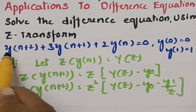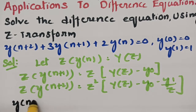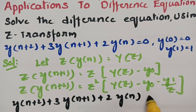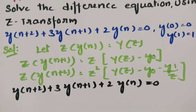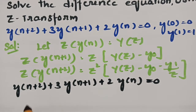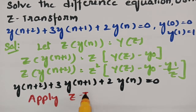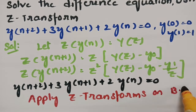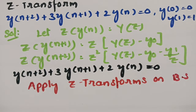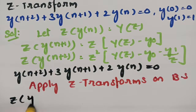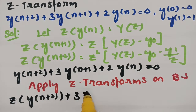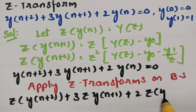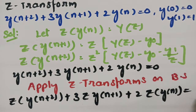From the question, the given equation is y(n+2) + 3·y(n+1) + 2·y(n) = 0. Now, applying Z-transforms on both sides, we get: Z-transform of y(n+2) plus 3 times Z-transform of y(n+1) plus 2 times Z-transform of y(n) equals zero, since Z-transform of 0 is 0.